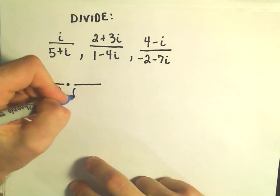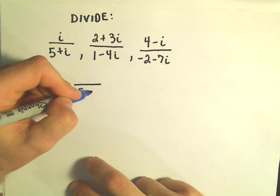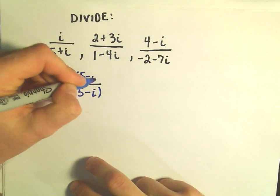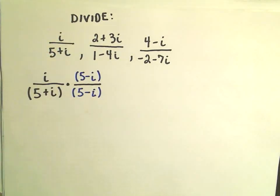There's a plus sign in between them, so what I do is I multiply the numerator and the denominator by 5 minus i, and then we'll have to clean it up a little bit and simplify it, but that's the basic idea.